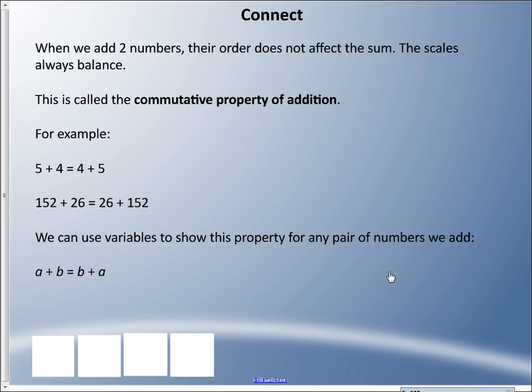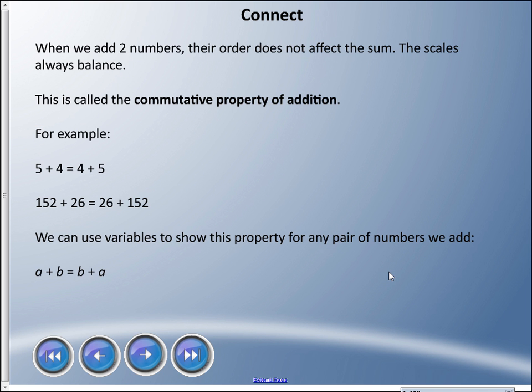Those two expressions are equal, and you might be noticing a pattern here, especially in the last two examples. So let's talk about that. When we add two numbers, their order does not affect the sum. The scales always balance, and we call this the commutative property of addition.